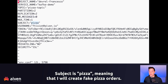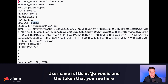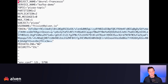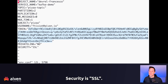Subject is pizza, meaning I will create fake pizza orders. Username is ftziot@aiven.io. The token you see here will be expired by the time this video is out. Private link is no — I'm not using private link. Security is SSL.